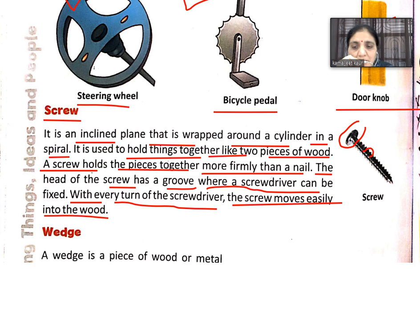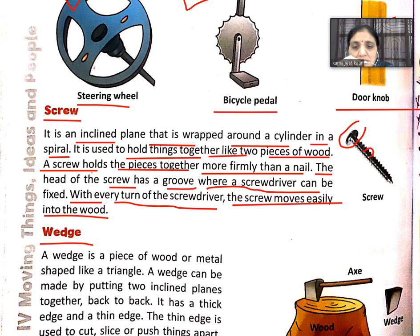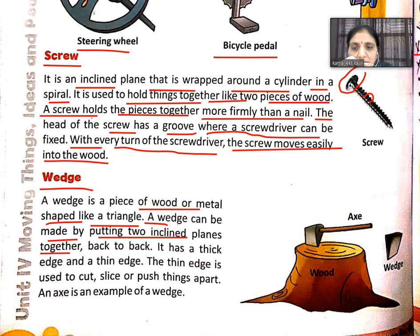Now, wedge. A wedge is a piece of wood or metal shaped like a triangle. A wedge can be made by putting two inclined planes together back to back. It has a thick edge and a thin edge — one side is thick and the other side is thin.